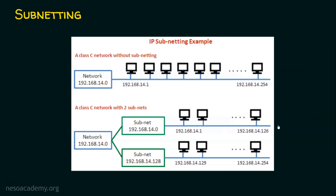Why can't we use 127 as a host address? Because in any subnetwork, the first IP address represents the network address and the last IP address represents the broadcast address. So in the first subnet, 192.168.14.127 is the broadcast address. In the second subnetwork, 192.168.14.128 is the network address, and 192.168.14.255 is the broadcast address.